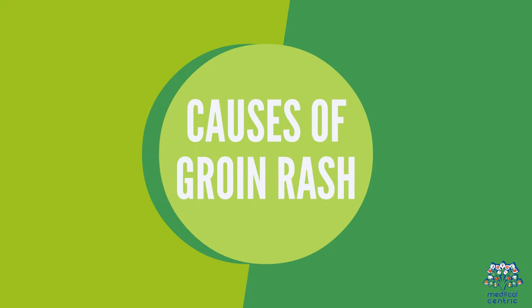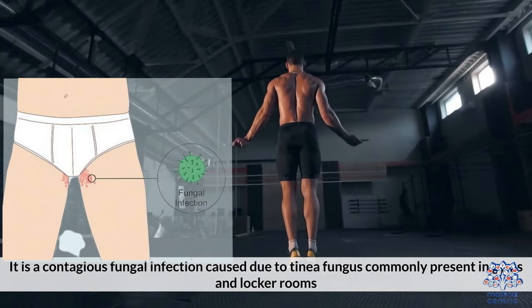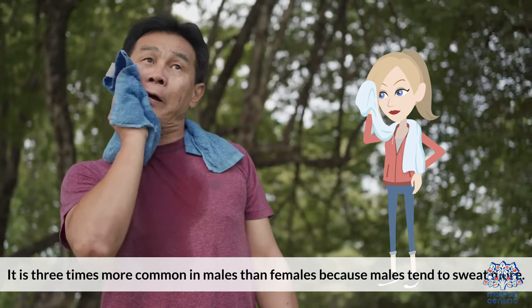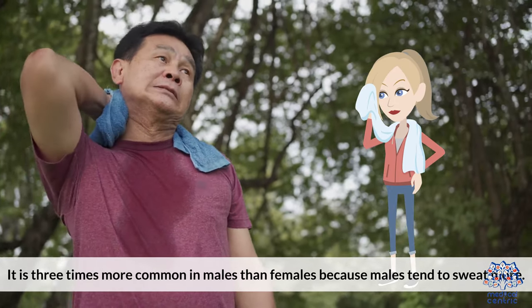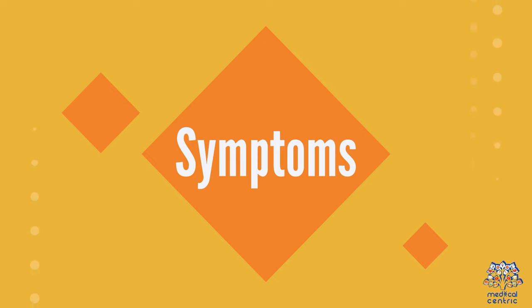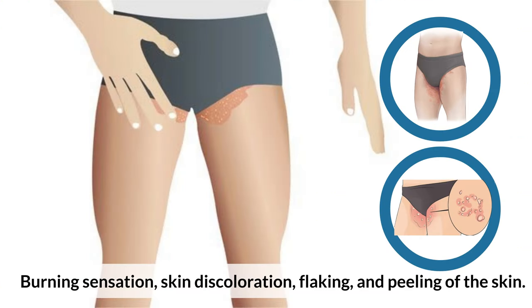Causes of groin rash. 1. Jock itch. It is a contagious fungal infection caused by tinea fungus, commonly present in gyms and locker rooms. It is three times more common in males than females because males tend to sweat more. Causes: skin-to-skin contact, sharing towels, infected clothes, and public shower facilities. Symptoms: redness, itching, and scaly patches on the skin over the groins, which may also affect the scrotum, penis, and anus, as well as burning sensation, skin discoloration, and flaking and peeling of the skin.